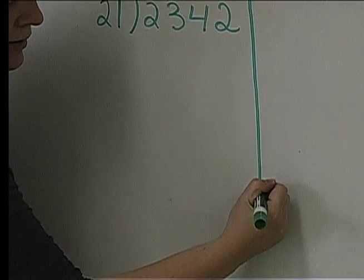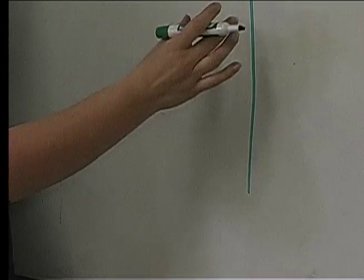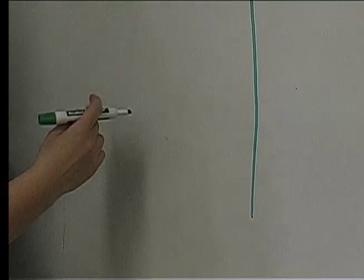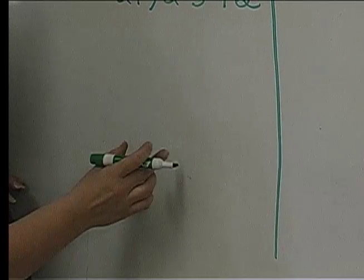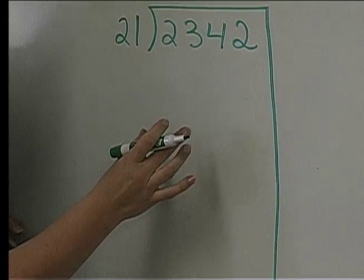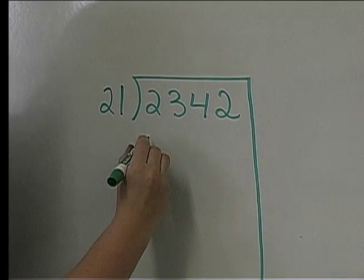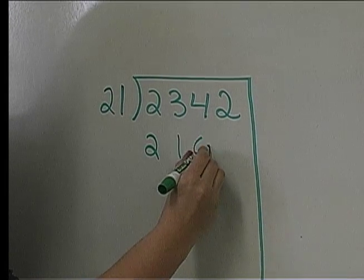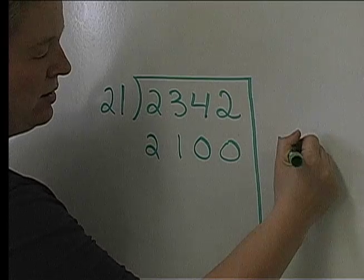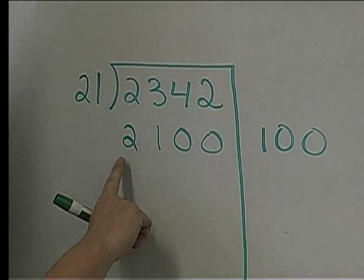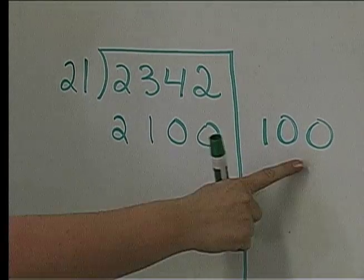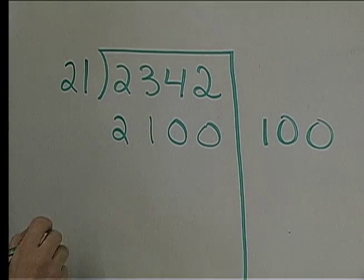They'll start by drawing a long vertical line at the end of their division problem and they'll say I know that 100 twenty-ones is 2100. So they'll write 100 here and 2100 here. 100 twenty-ones is 2100.